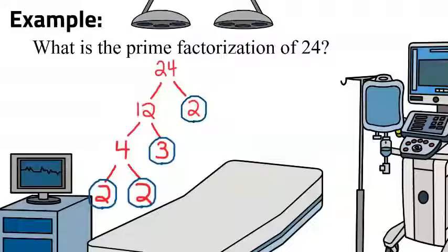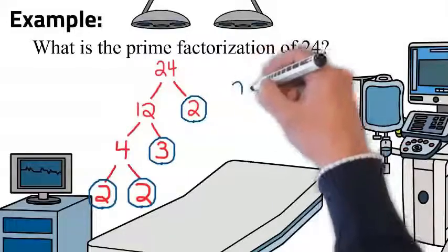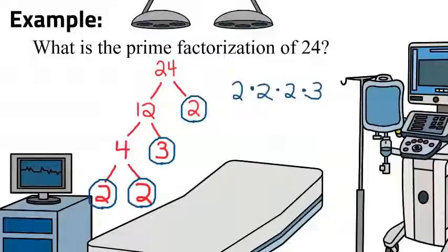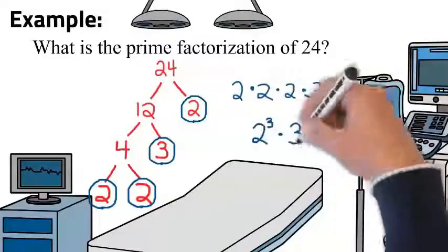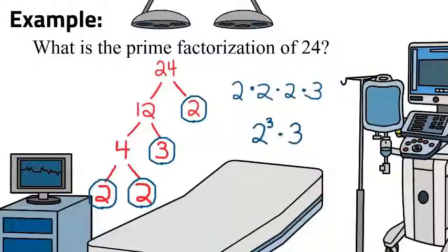So 24 can be written as 2 times 2 times 2 times 3, or 2 to the 3rd power times 3. And that is how we perform prime factorization.